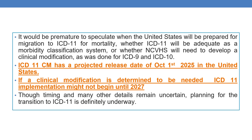It would be premature to speculate when the United States will be prepared for migration to ICD-11 for mortality, or whether ICD-11 will be adequate as a morbidity classification system, or whether NCVHS will need to develop a clinical modification as was done for ICD-9 and ICD-10. ICD-11-CM has a projected release date of October 1st, 2025 in the United States. If a clinical modification is needed and there is further delay, ICD-11 implementation might not begin until 2027. Though timing and many details remain uncertain, planning for the transition to ICD-11 is definitely underway.